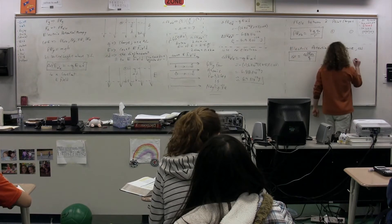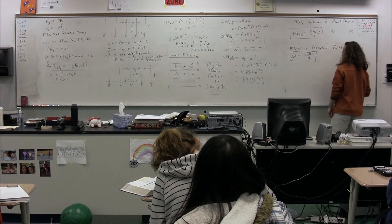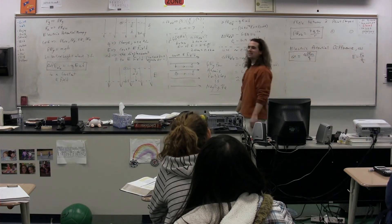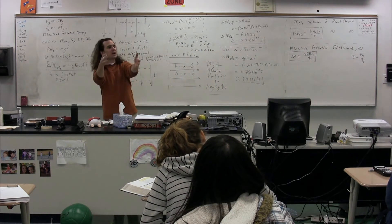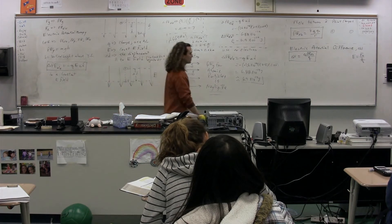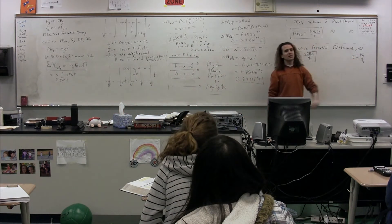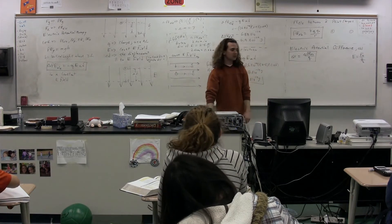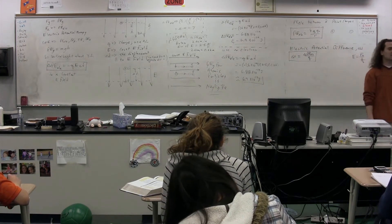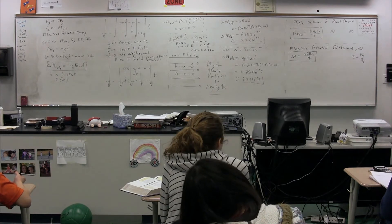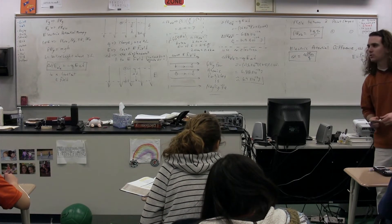I want to relate this to the electric field, which is defined as the electric force per unit charge. The electric potential difference is basically taking the electric potential energy and getting rid of the test charge, just like the electric field is the force without the charge. Notice they're both dividing by Q. That's what electric potential difference is — it's the energy without the charge, the energy per unit charge.